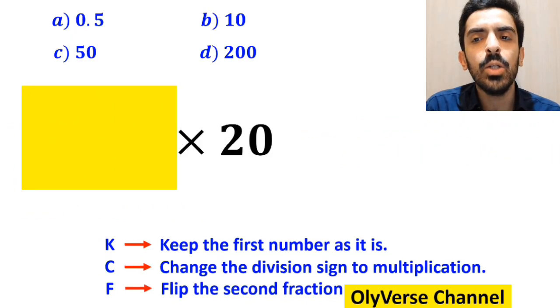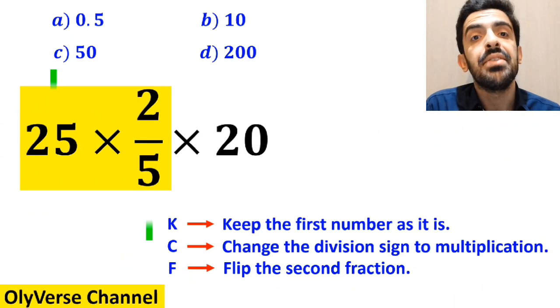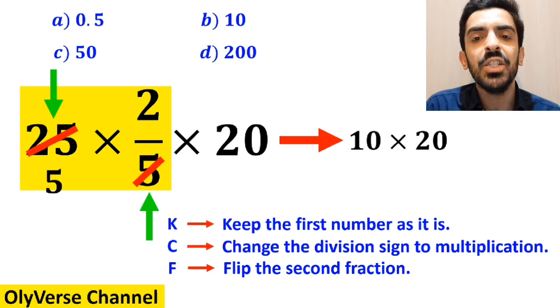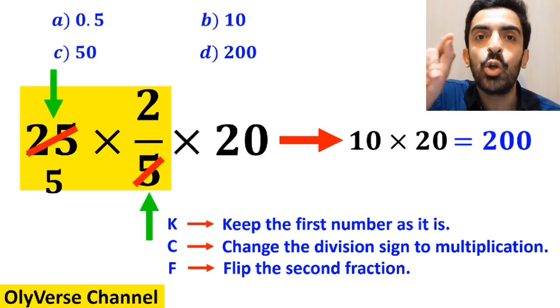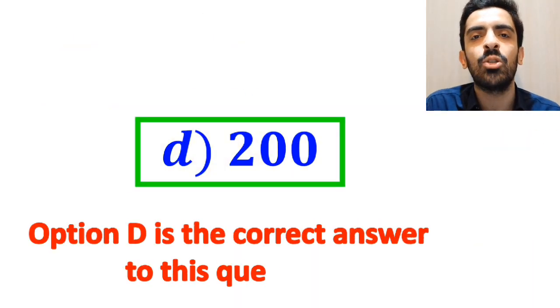So we remove the highlighted part and replace it with 25 multiplied by 2 over 5. Now the number 25 cancels out with the 5 in the denominator, and this expression simplifies to 10 multiplied by 20, which finally gives us the answer 200. Therefore, option D is the correct answer to this question.